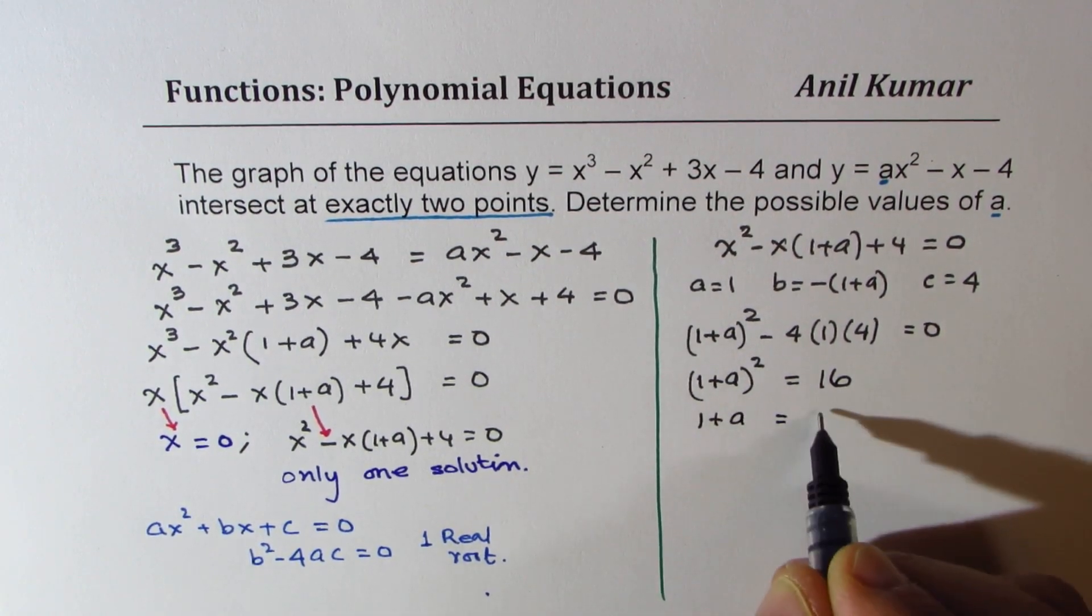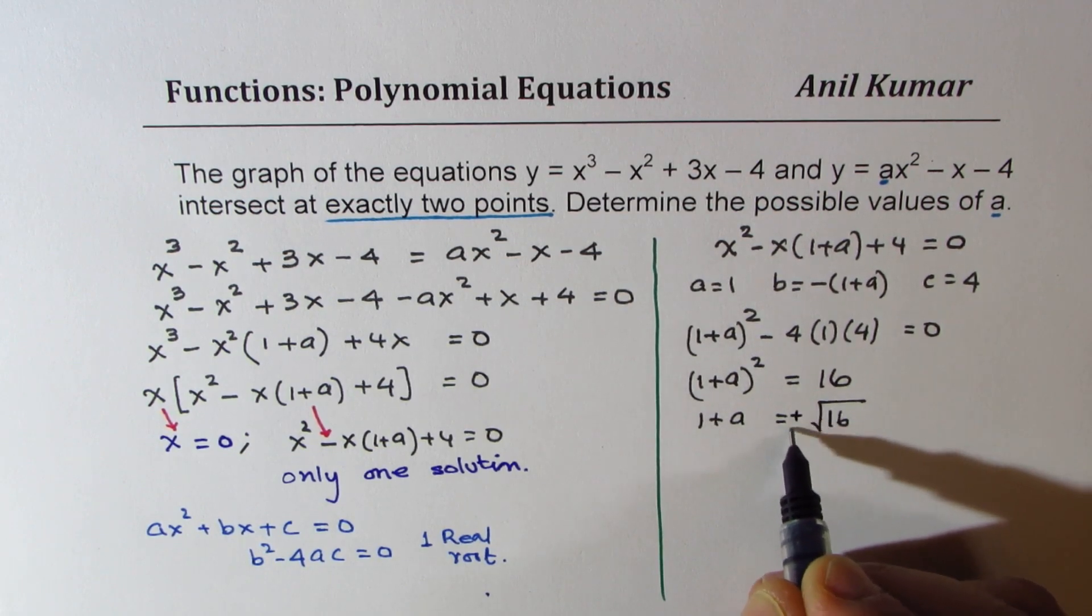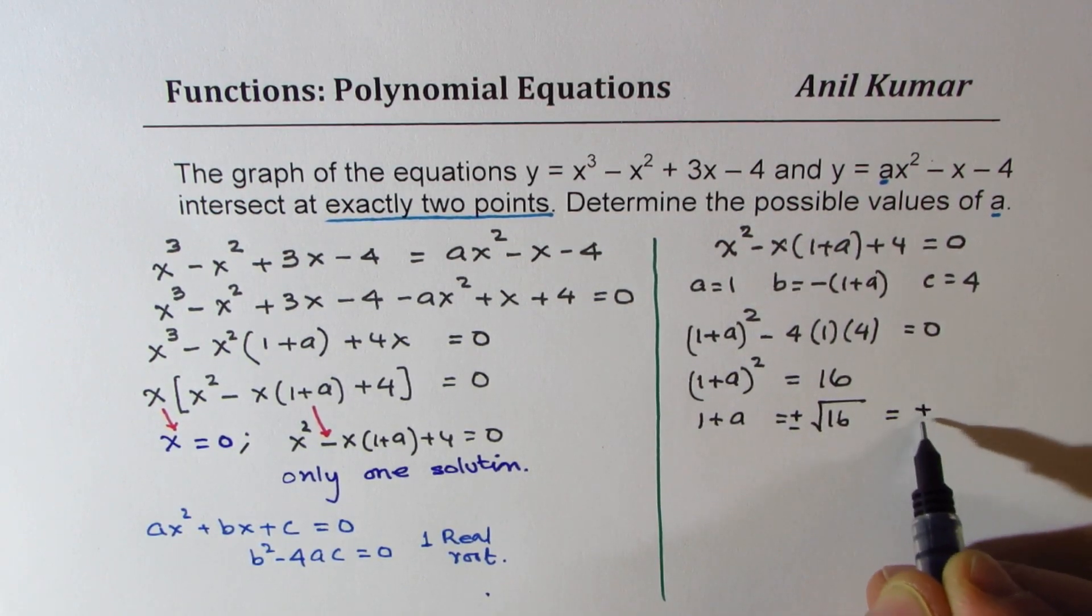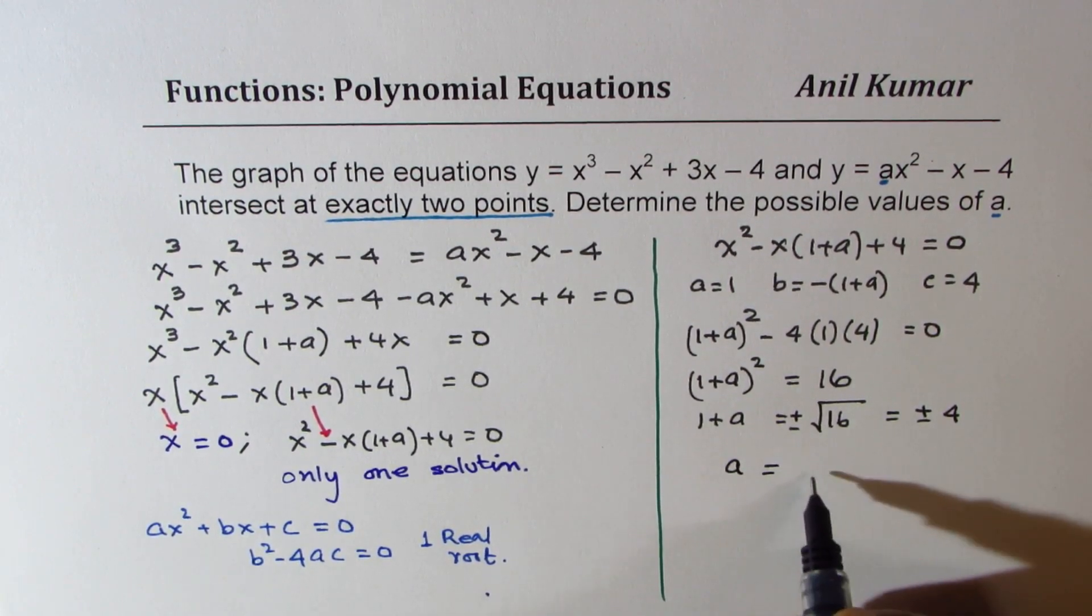So 1 plus a should be equal to square root of 16. Whenever you do square root, you have to do plus and minus, so you get two values, plus minus 4.